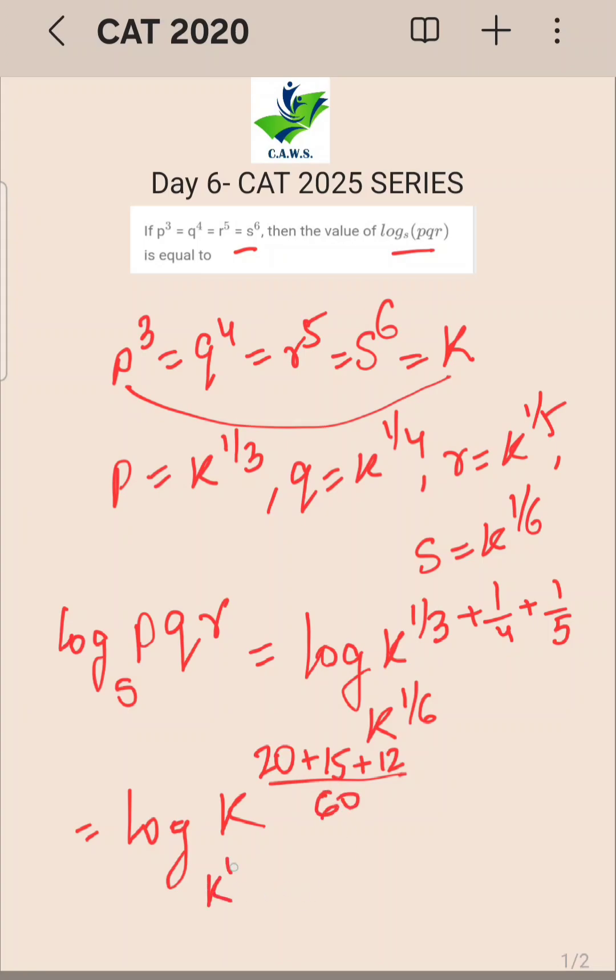And this will be log K raise to 1 by 6. Is this clear? So this will become log of K raise to, this will become 47 to the base 60. Sorry, 47 upon 60. And this will be K raise to 1 by 6.